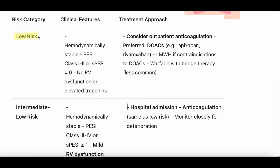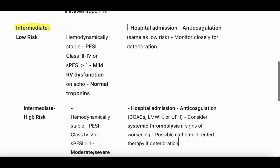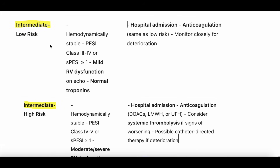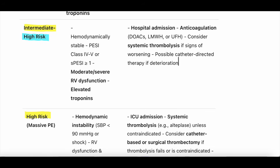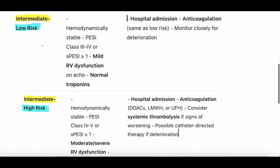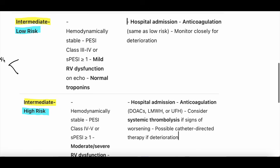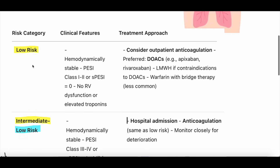That category may be low risk, intermediate risk — and within intermediate risk there's intermediate low and intermediate high risk — or it may be high risk. High risk is also known as massive, intermediate risk is often categorized as sub-massive, and low risk is just low risk.